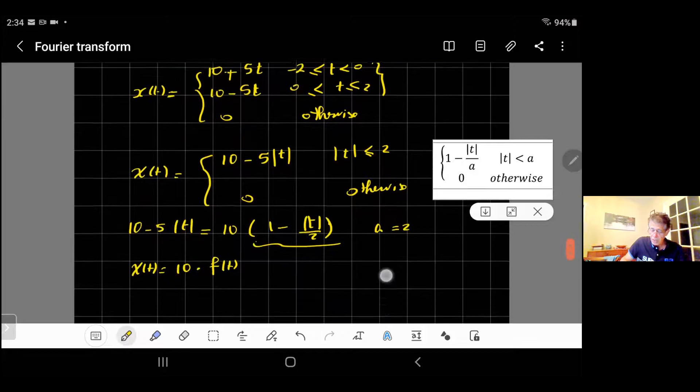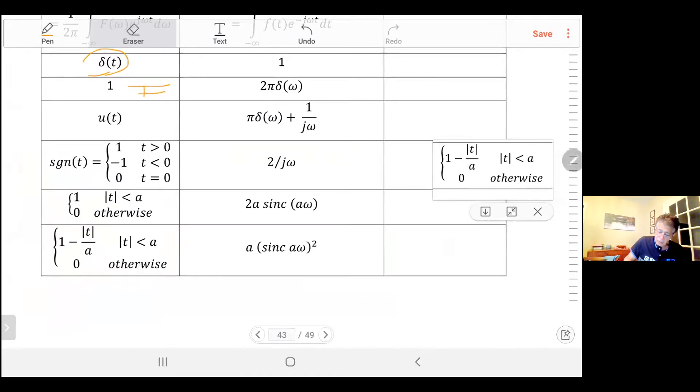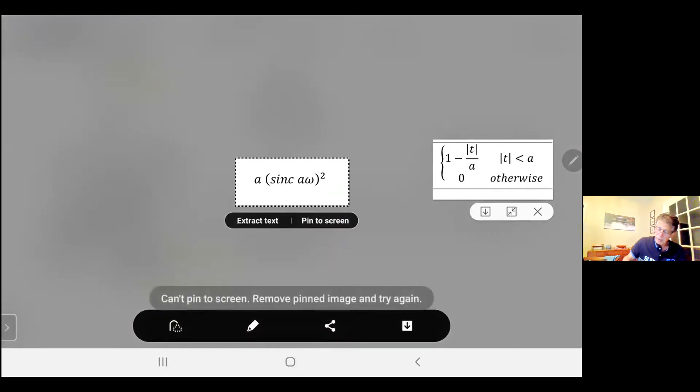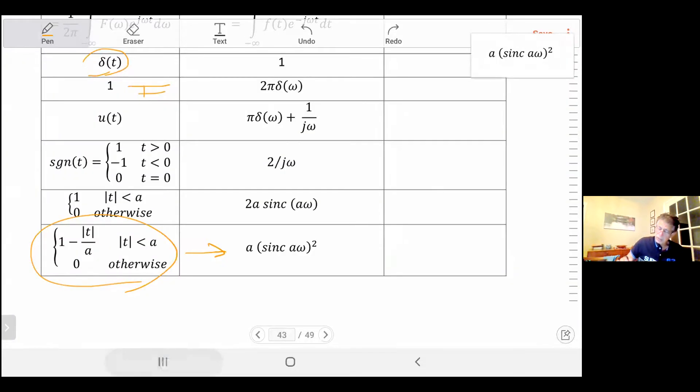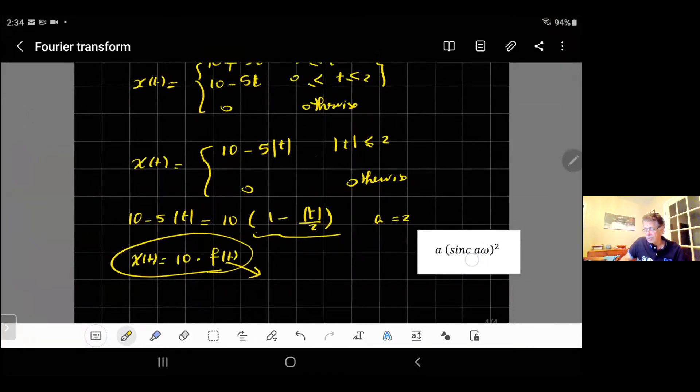So my function now x(t) will be equal to 10 times this one, which is let me call it f(t). Then what? It's very easy. The Fourier series of this one is given in the table. I will go to the table and show you. It says there in the table when you have this formula, the corresponding Fourier transform is given.